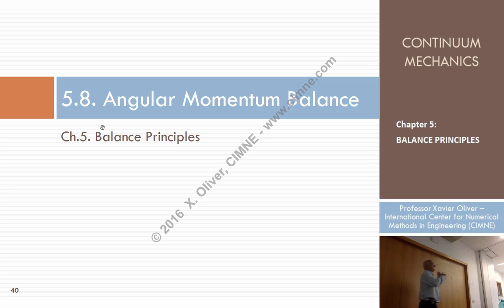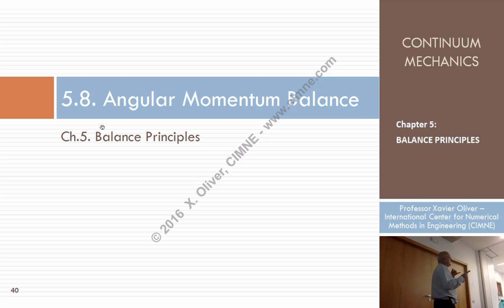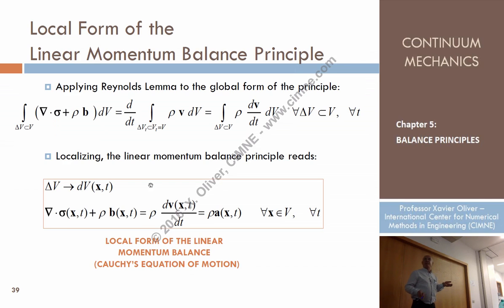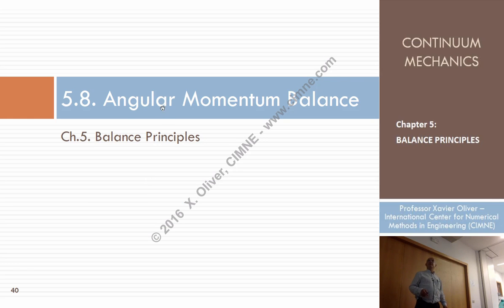So far I've found the conservation of mass, which led to the continuity equation. Now we have postulated the balance of linear momentum, and we ended up with the Cauchy equation — the local form of the linear momentum balance. Let's go another step.